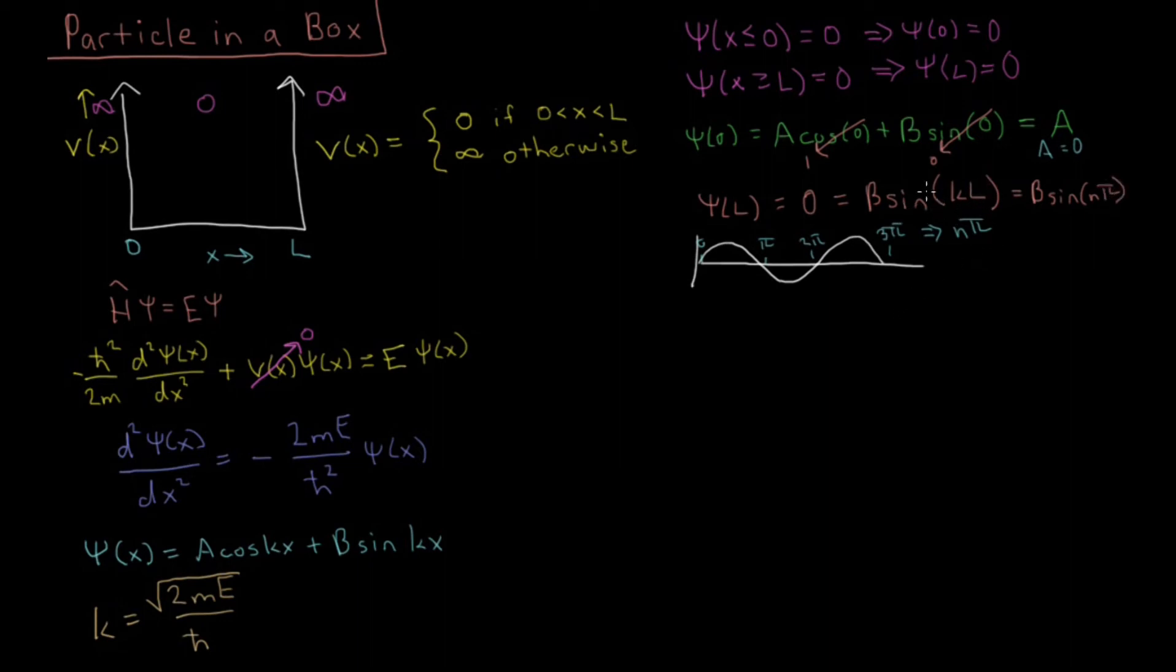Then looking at the correspondence here, we see that inside the sine here, we have this KL and n pi, and both of those have to equal the same thing.